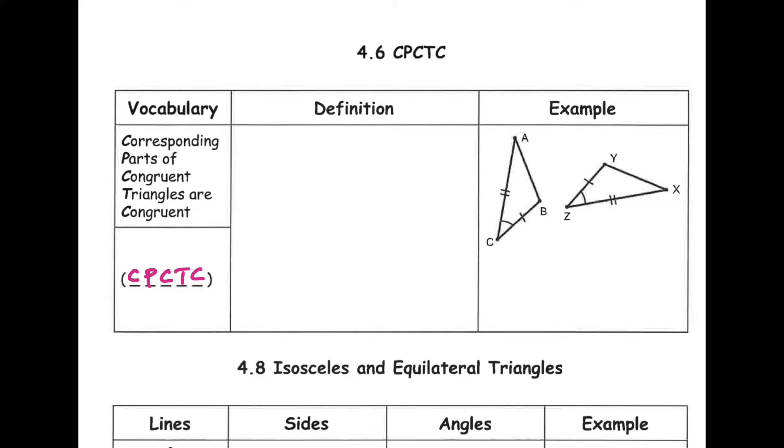And I won't ever make you guys write Corresponding Parts of Congruent Triangles Are Congruent, but you do have to write CPCTC in the triangle. And all this means is, if we have triangles congruent, so if triangles are congruent, which means we have to prove that they're congruent in our proofs, then all three pairs of sides and all three pairs of angles are congruent as well.